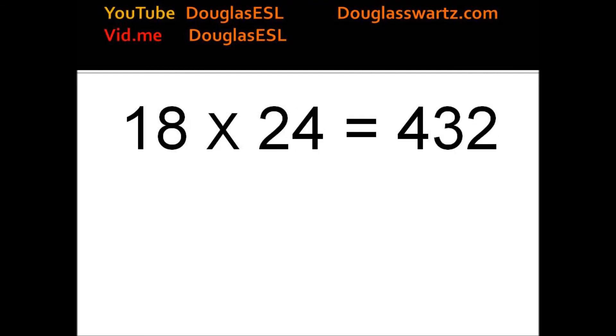18 times 24 equals 432. 18 times 25 equals 450.